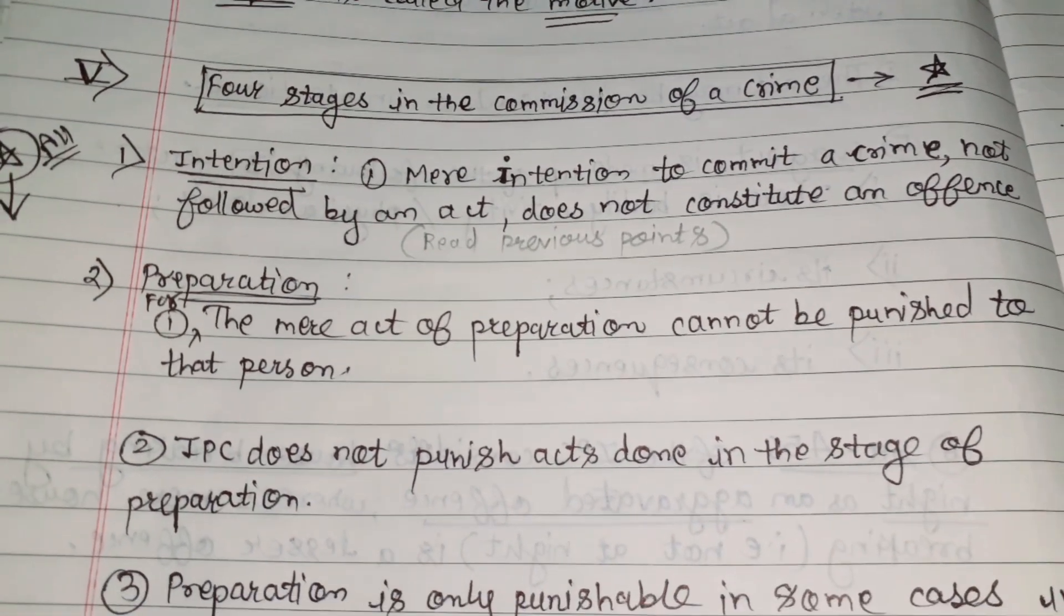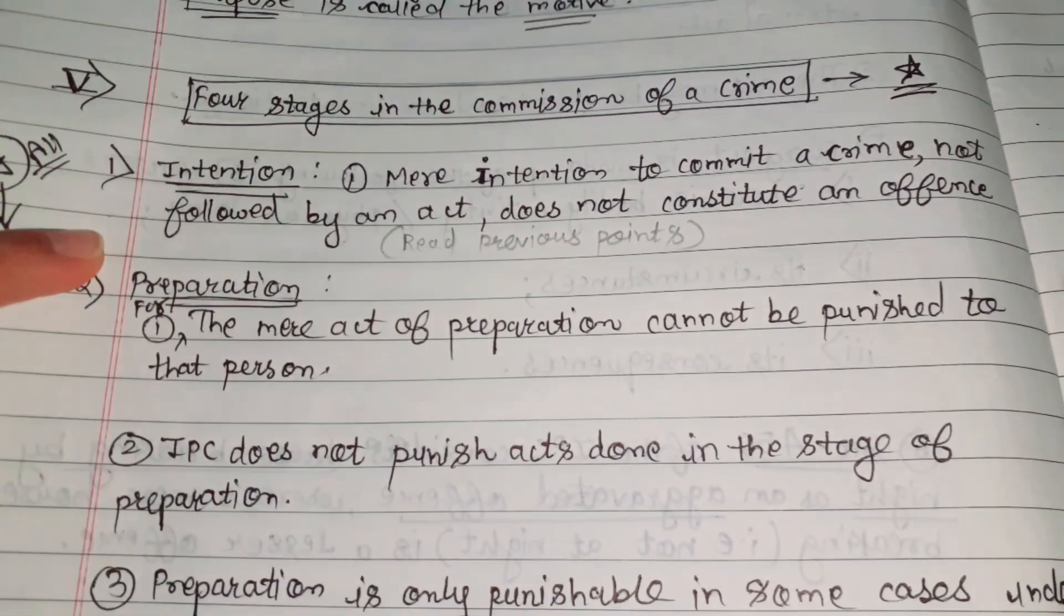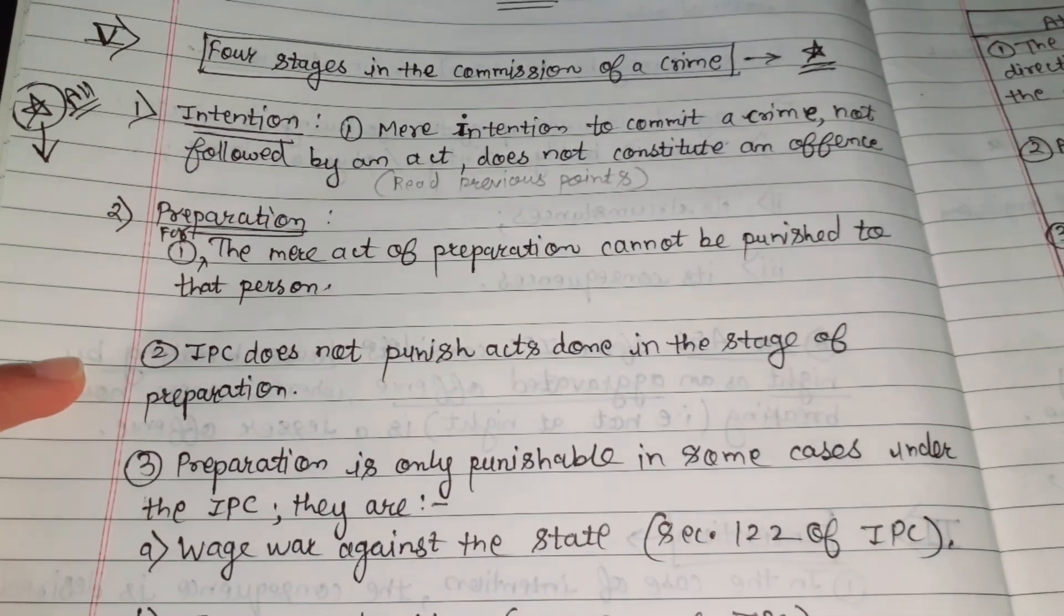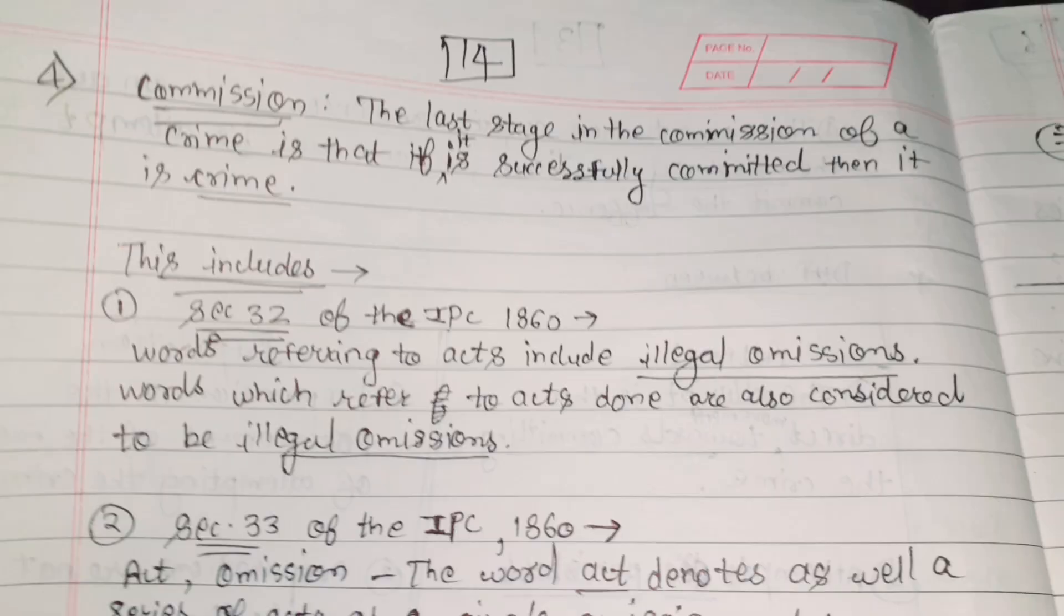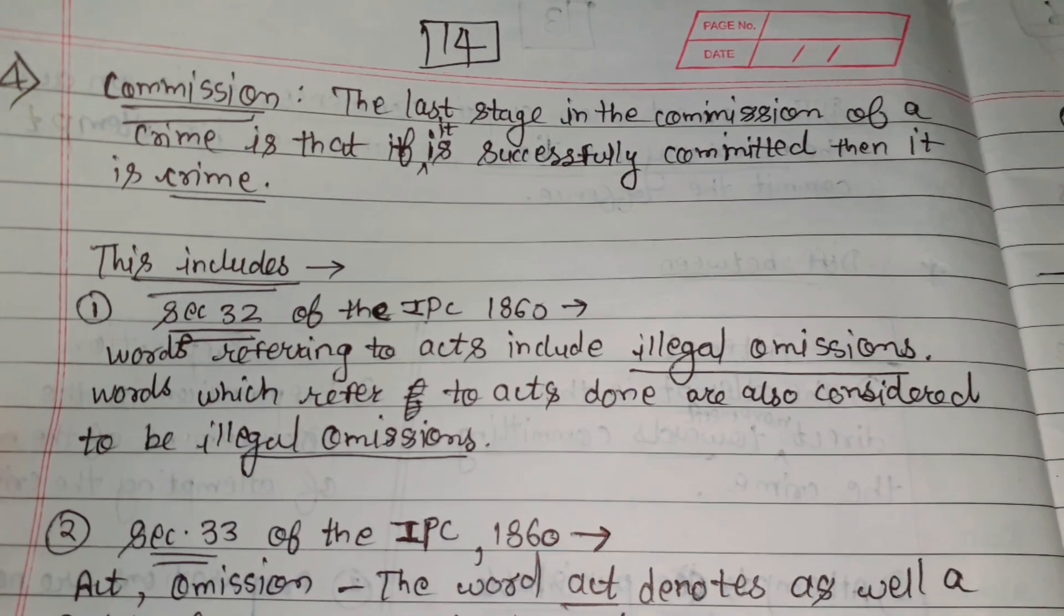Four stages in the commission of a crime. First stage is intention, second is preparation, third is the attempt, and fourth stage is the commission.